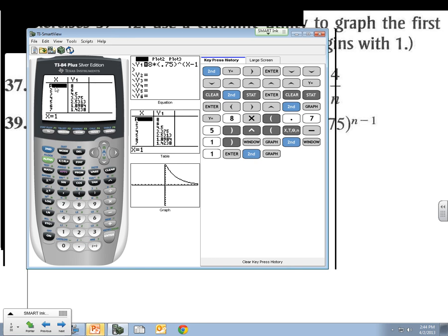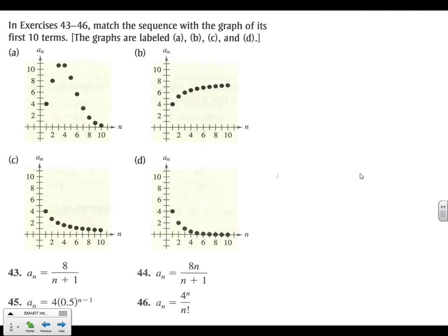And we'll jump over to our table. And if we start here, the first term is going to be 8. The second term is 6. Then 4.5. And you can see as we go down. So those would be our particular numbers in our sequence. And the graph, again, would look like this here.